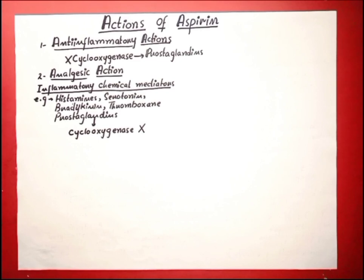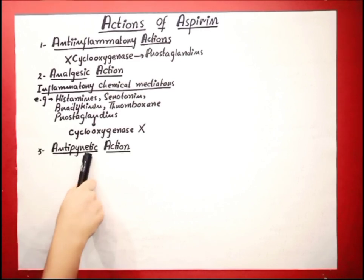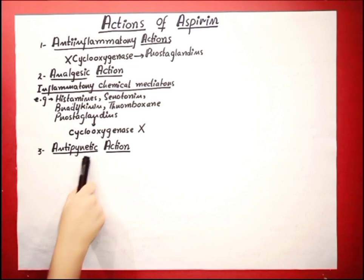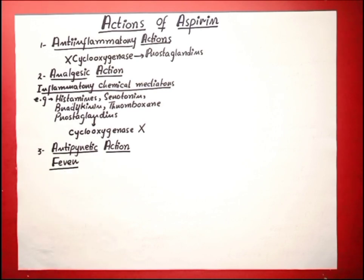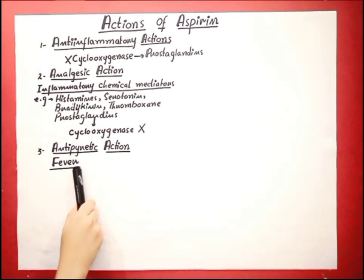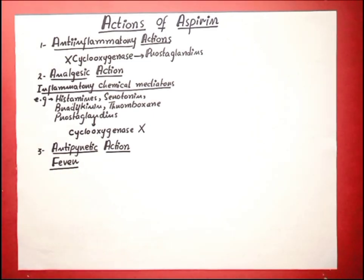Now the antipyretic action. Antipyretic means any agent which helps us get relief from fever. Let's discuss how fever occurs in our body. Fever, or a rise in body temperature, occurs whenever the set point of the anterior hypothalamic thermoregulatory center is elevated.